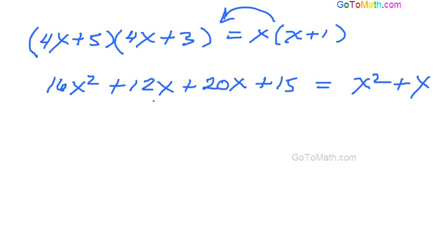Now let's condense this down a little bit more. 16x squared, so we've got 32x plus 15 equals x squared plus x. All right.